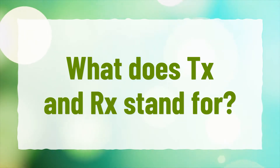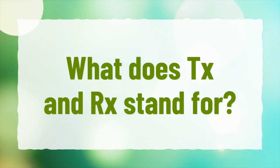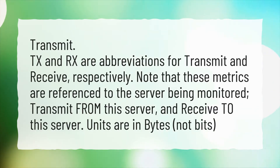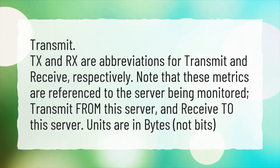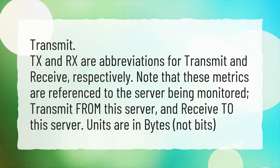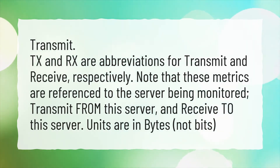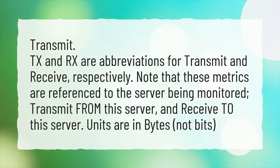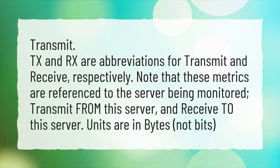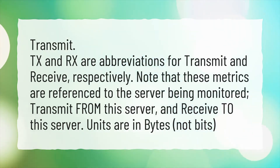What does TX and RX stand for? TX and RX are abbreviations for transmit and receive, respectively. Note that these metrics are referenced to the server being monitored — transmit from this server and receive to this server. Units are in bytes, not bits.